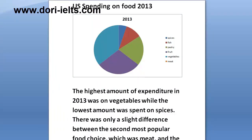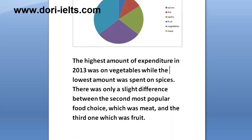This is our sample topic. It is a pie chart and it shows the US spending on food for 2013. You can see the pie chart here with different types of food. Let's read the overview paragraph, which follows the introduction.